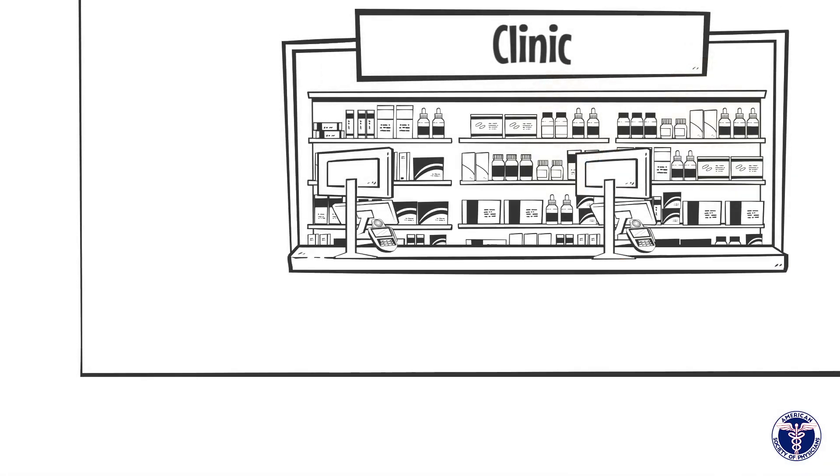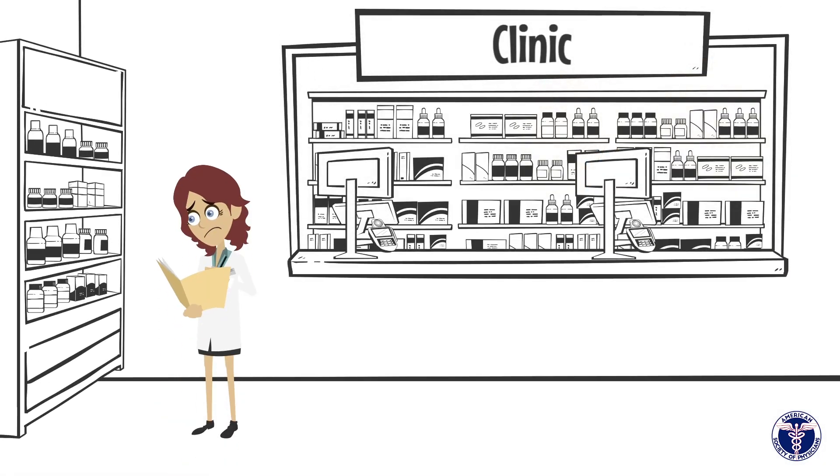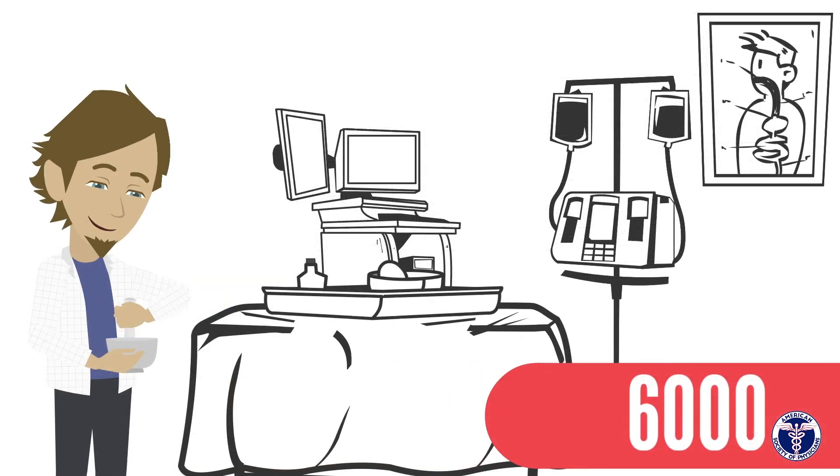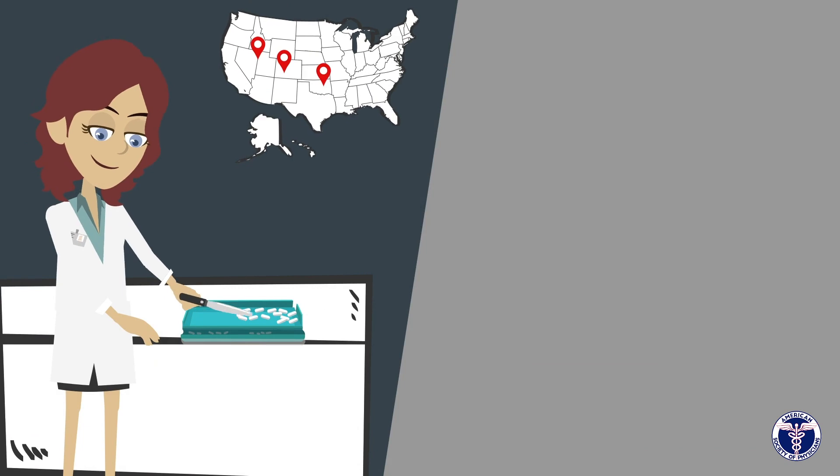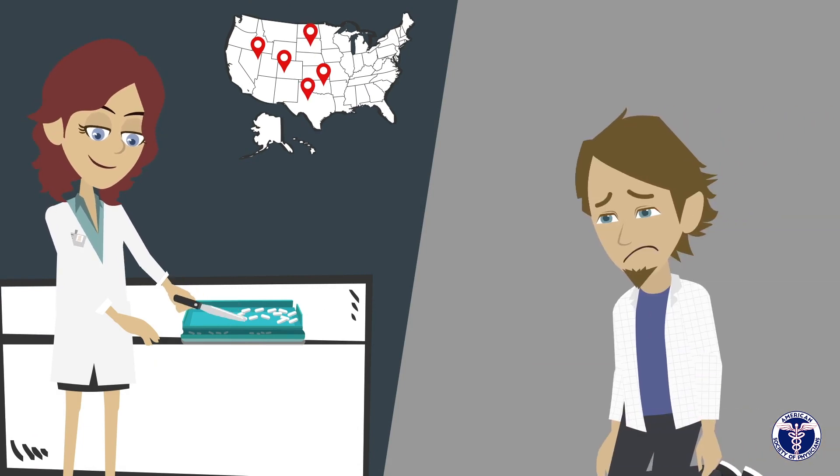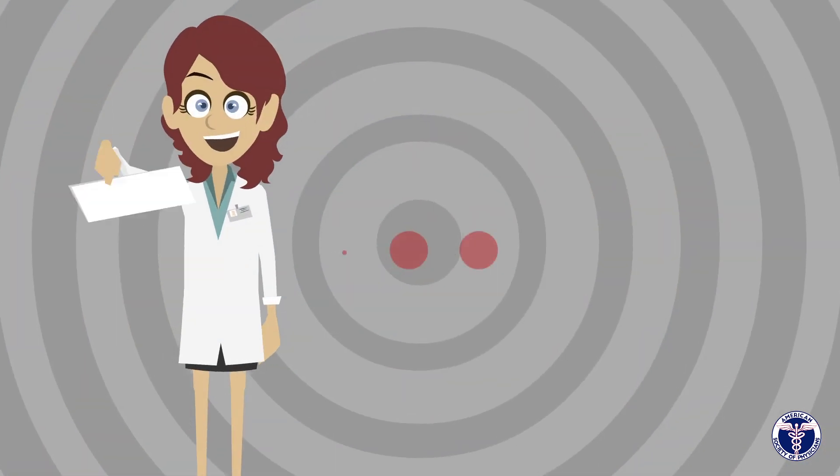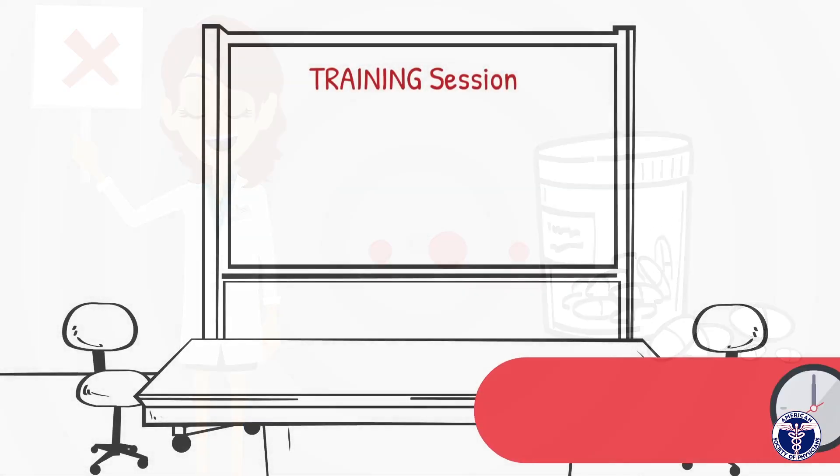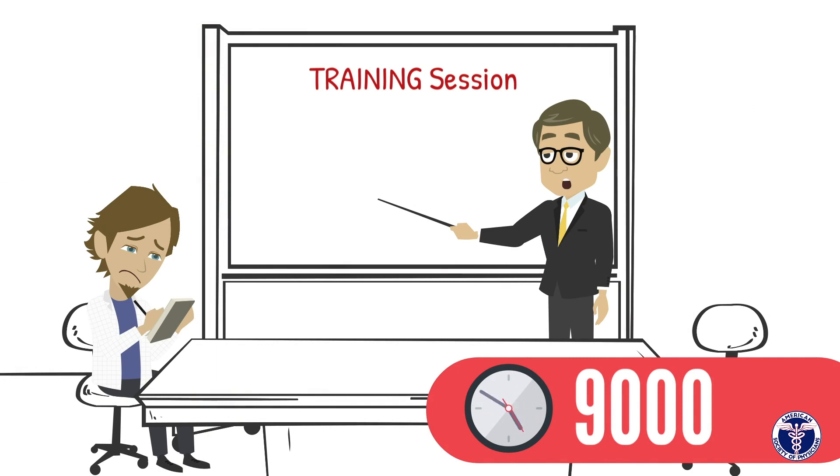Upon graduation, a nurse practitioner has 500 clinical hours. Todd has 6,000. A nurse practitioner can practice independently in 23 states. Todd cannot. A nurse practitioner does not require residency training to practice medicine. Todd needs at least 9,000 hours to practice.